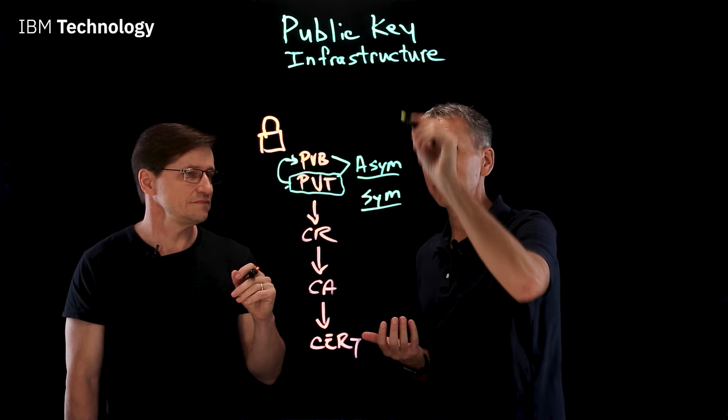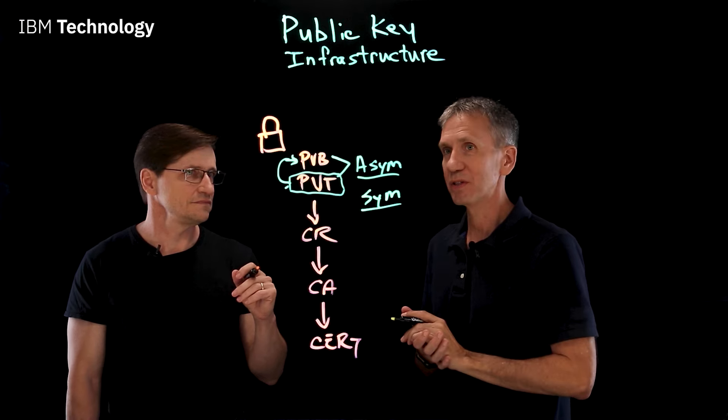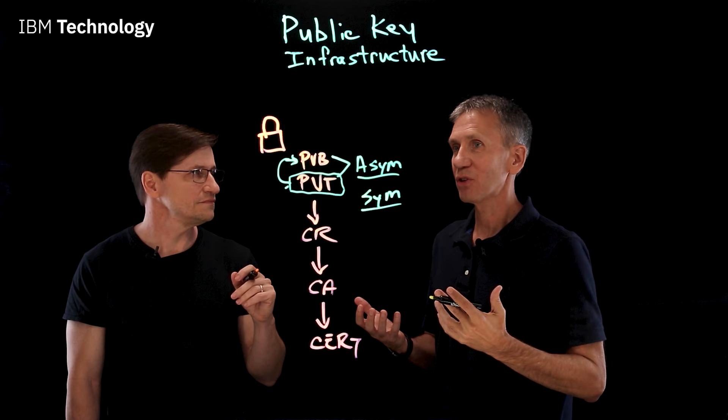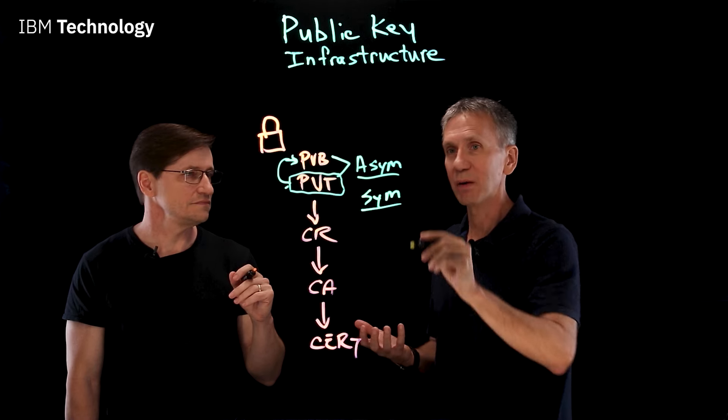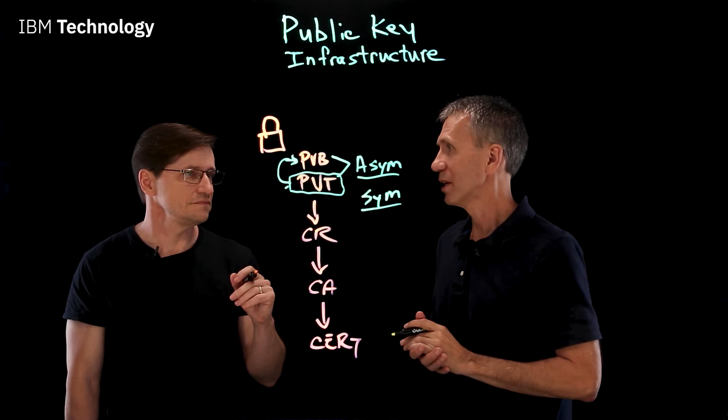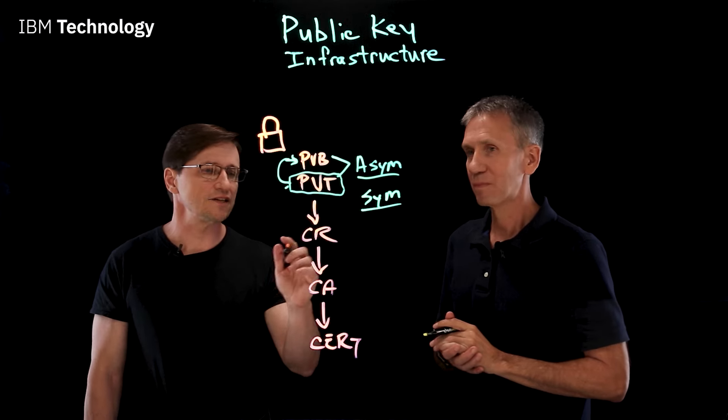So the PKI, the public key infrastructure part, refers to this asymmetric. And what that really solves for us is the key distribution problem that was left over by using symmetric key cryptography. Okay, great. I got that.